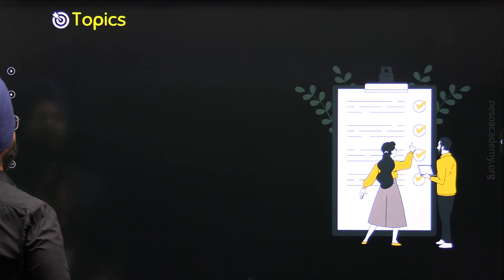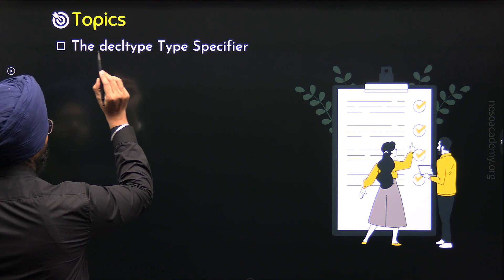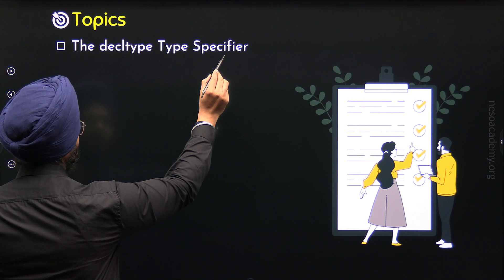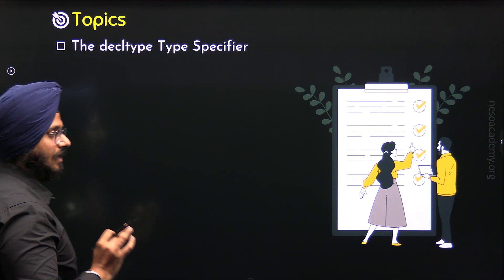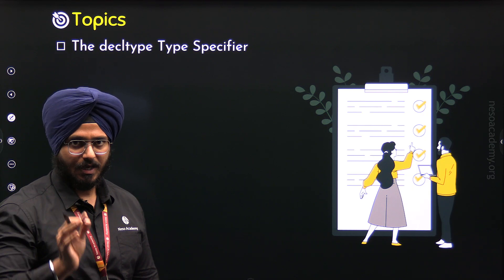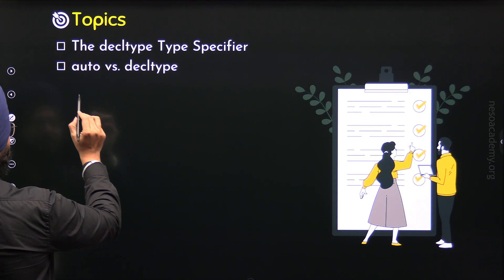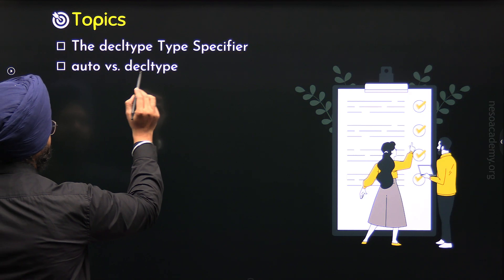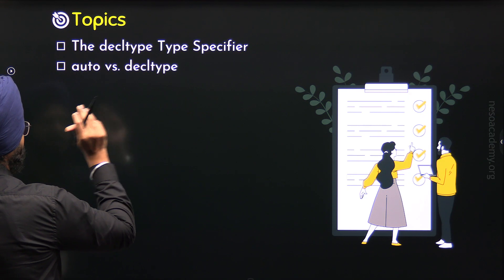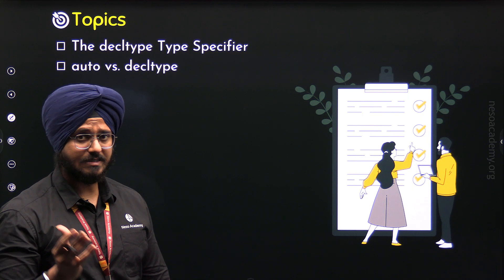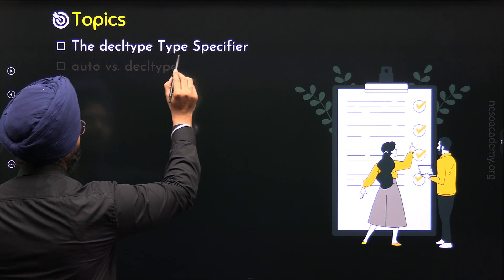The first topic of this lecture is the decltype type specifier. We will understand what it is and, through an example, we will also implement it. Then we will move to the next topic where we will discuss the difference between the auto type specifier and the decltype type specifier. So these are the two topics we need to understand in this lecture.